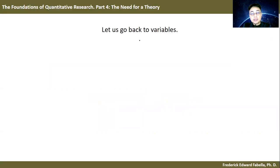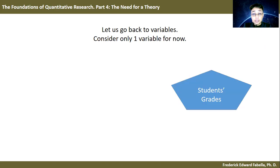Let us go back to variables. We've had discussions about variables in previous lectures, and for now, let us consider only one variable. Let's take, for example, the variable of students' grades. Students' grades can be high or low, and let's designate this as variable one.